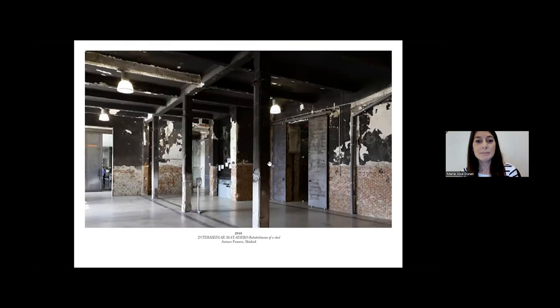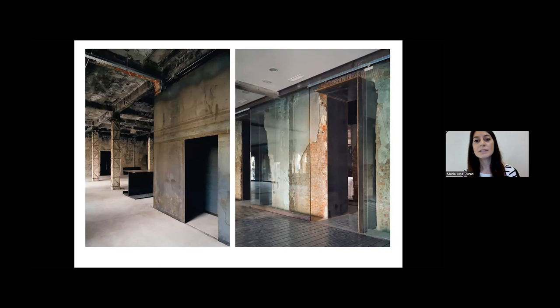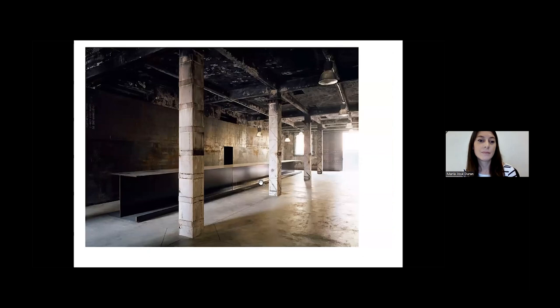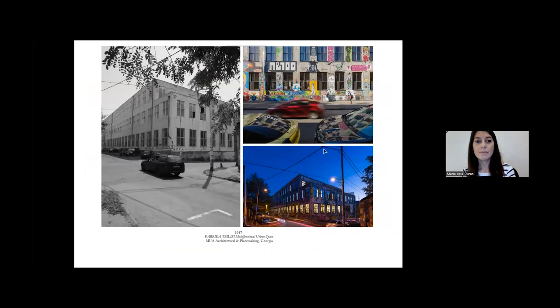The second project is called 'Intermediae Matadero' by Arturo Franco in Madrid, transformed into an exhibition centre. The project preserves the historical values of the existing building with minimal intervention. The old and new languages show themselves like naked languages — the designer keeps the cuts producing the wall and the ceiling appears with accomplices. They also use materials coming from industrialization, like a large beam to link the old and new materials.